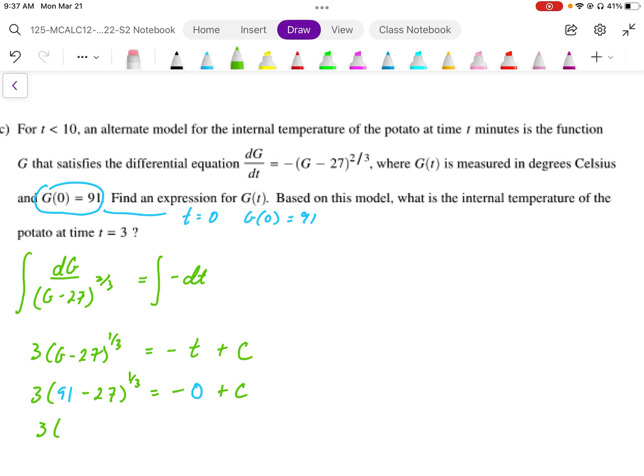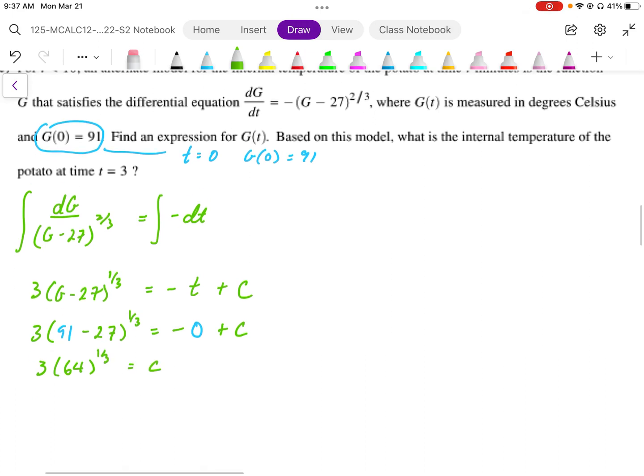The cube root, and that's going to be equal to our C value. The cube root of 64 is going to be 4, so we end up with 3 times 4 equals C, or in other words, C equals 12.